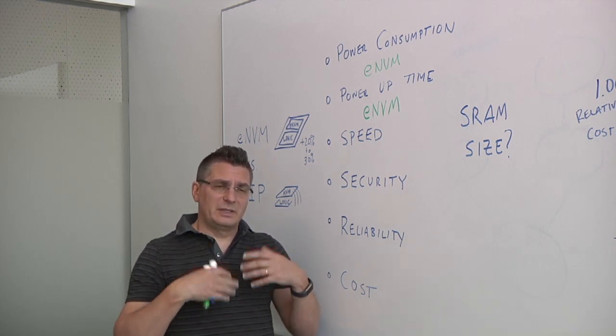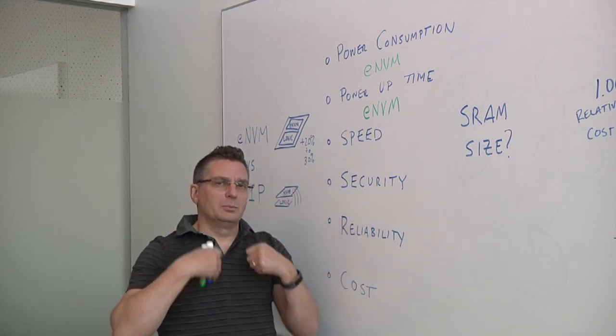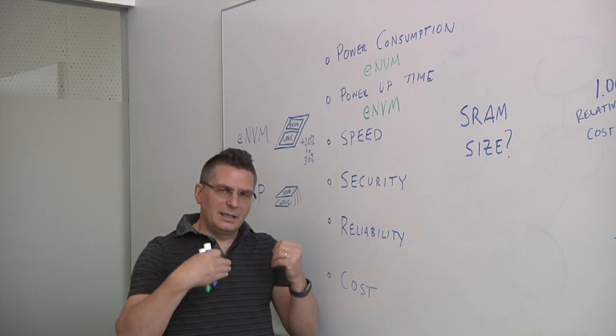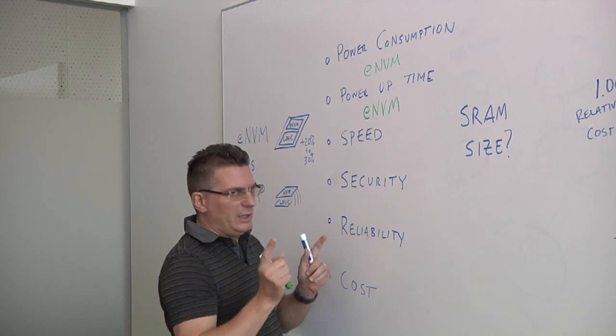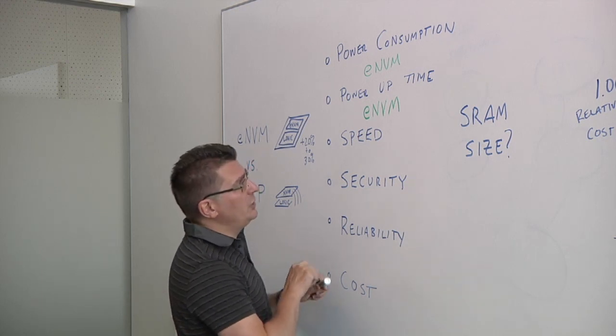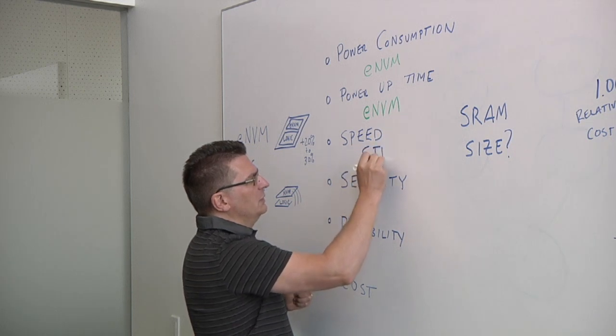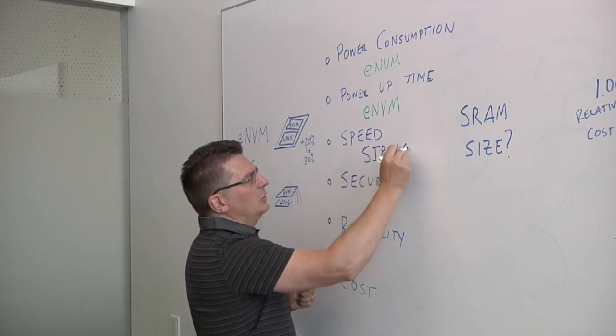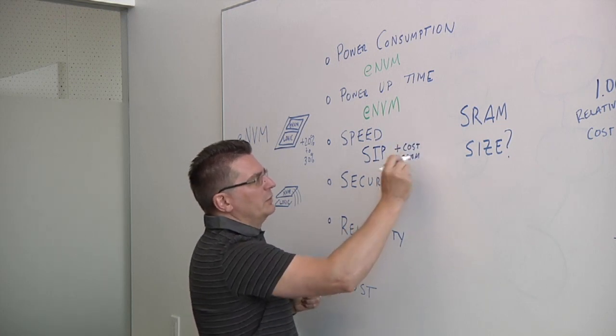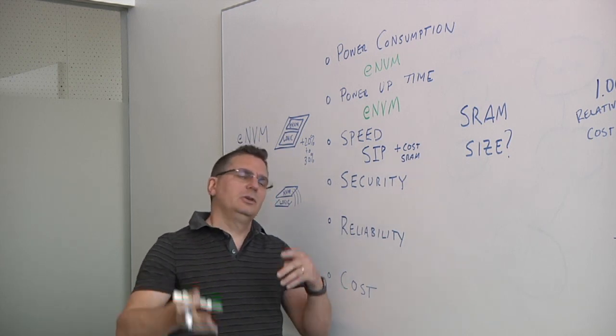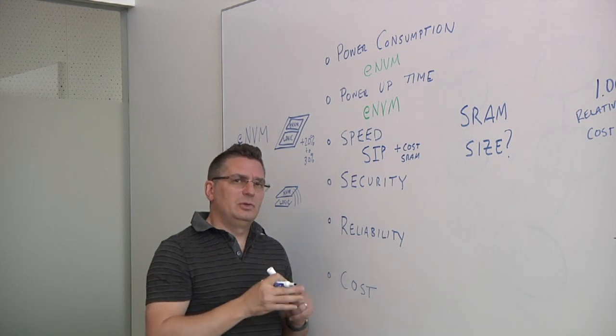Now in the case of a lot of devices that use SIP, what they do is they'll fetch all that data during the power up time, bring it into SRAM, and then execute directly out of the SRAM. So it depends on if you want to shadow in SRAM. If you're shadowing in SRAM, then SIP is going to be your superior solution. However, you now have the added cost of shadowing in SRAM. In other words, you've paid for the memory external, and then you've also paid for additional SRAM inside to be due to the shadowing.